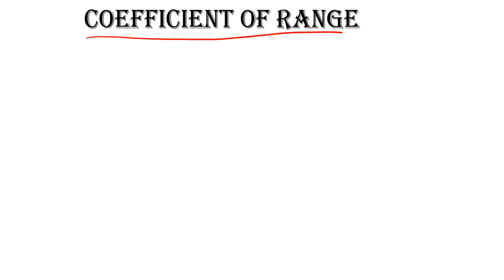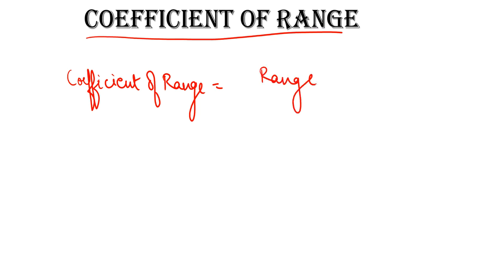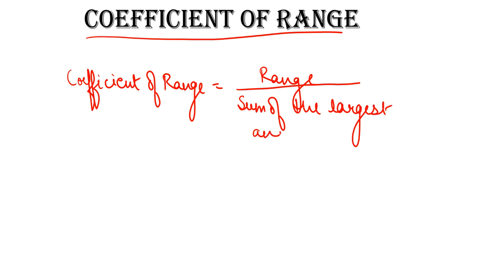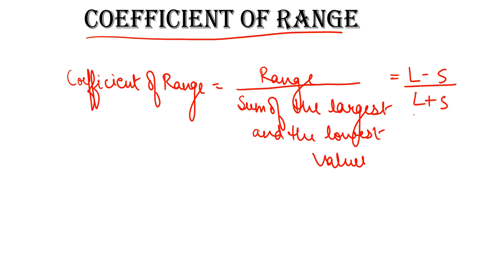That relative measure is the coefficient of range. The coefficient of range is equal to range divided by the sum of the largest and the lowest value. Written as a formula: L minus S upon L plus S, where L is the largest value and S is the smallest value. We take the difference of the two values in the numerator and the sum in the denominator.